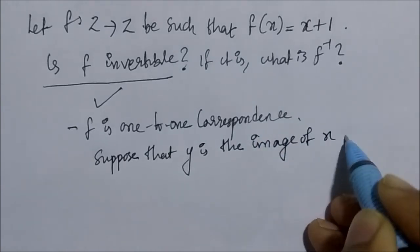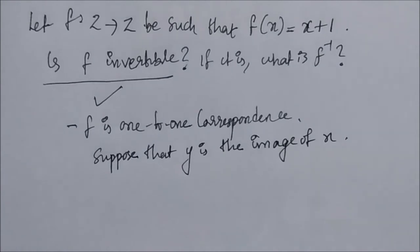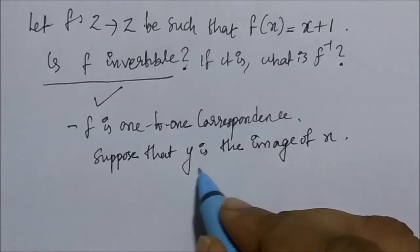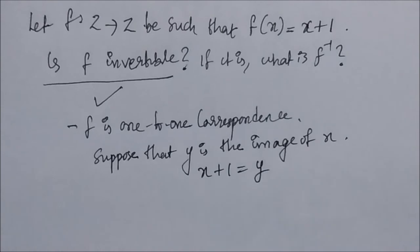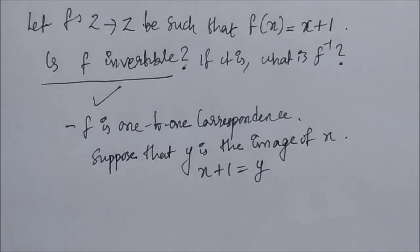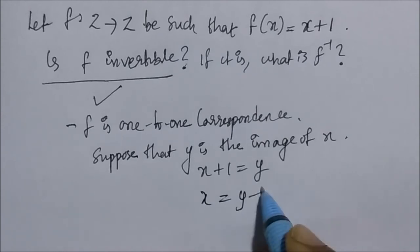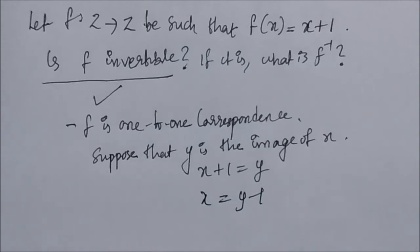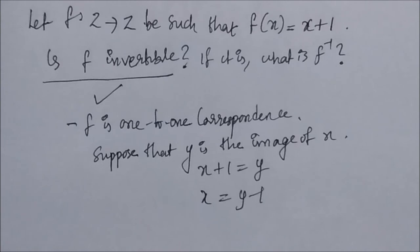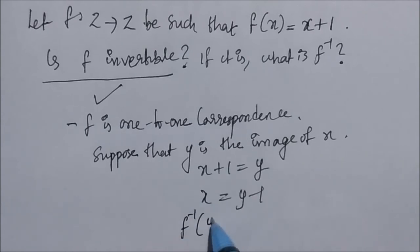To find f⁻¹, suppose y is the image of element x, meaning f(x) = y, so x+1 = y, which gives x = y−1. So the function f maps the element y−1 to y. When we reverse map, f⁻¹(y) = y−1. That is the inverse function.